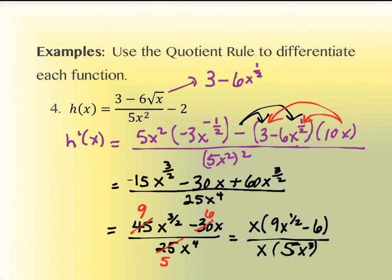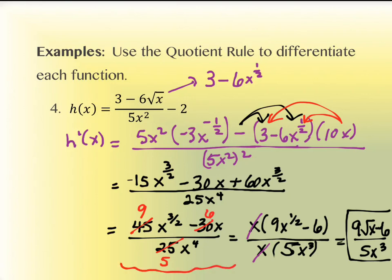After canceling the x, the final simplified answer is (9x^(1/2) − 6) over 5x³. You can write x^(1/2) as √x if you prefer — it doesn't matter. Regarding whether to show every step: you don't have to show the factoring-out step explicitly. Some of you are comfortable reducing directly without physically writing the factored x in front, and that's fine. You could skip from the unsimplified line straight to the final answer.